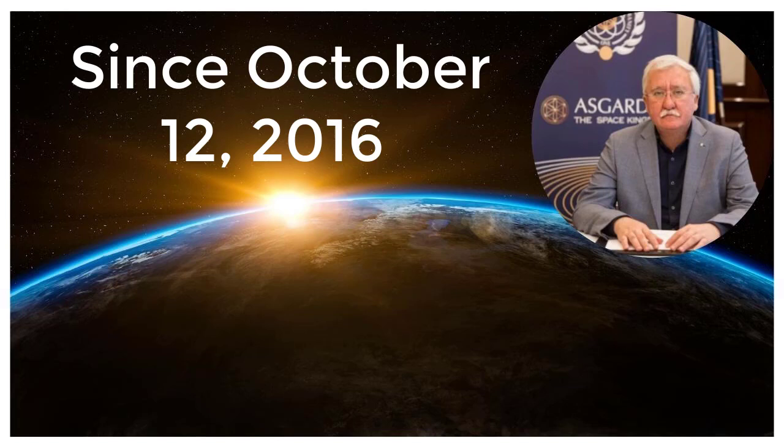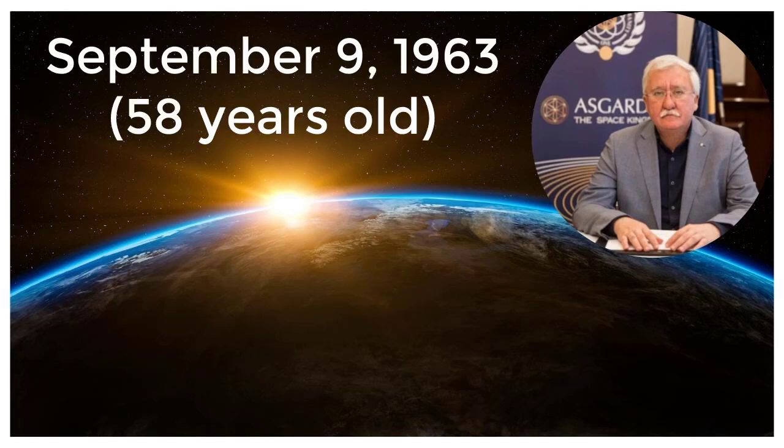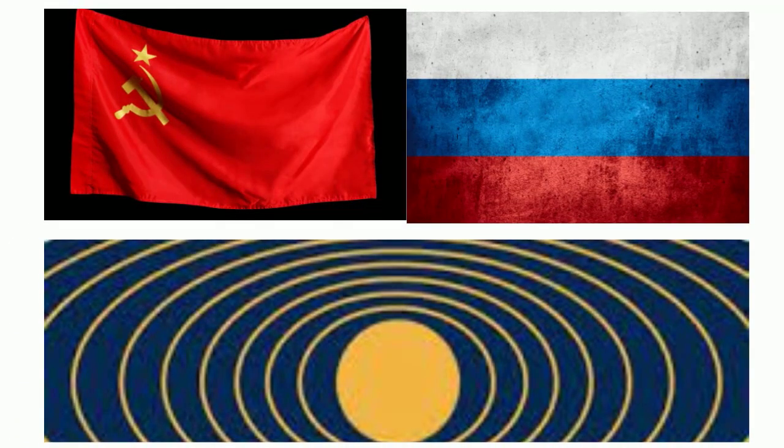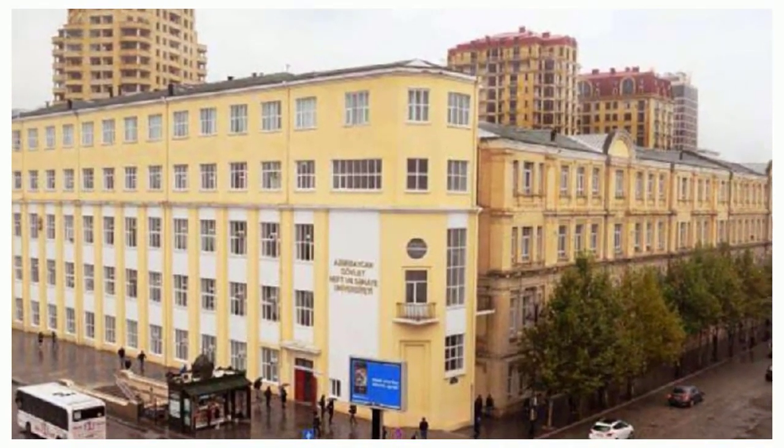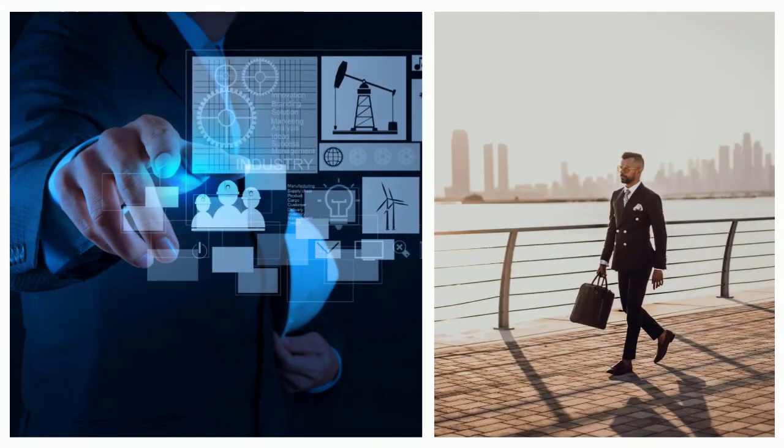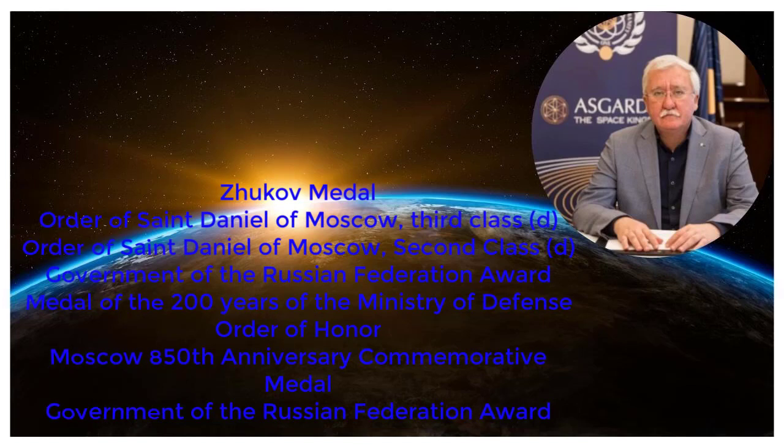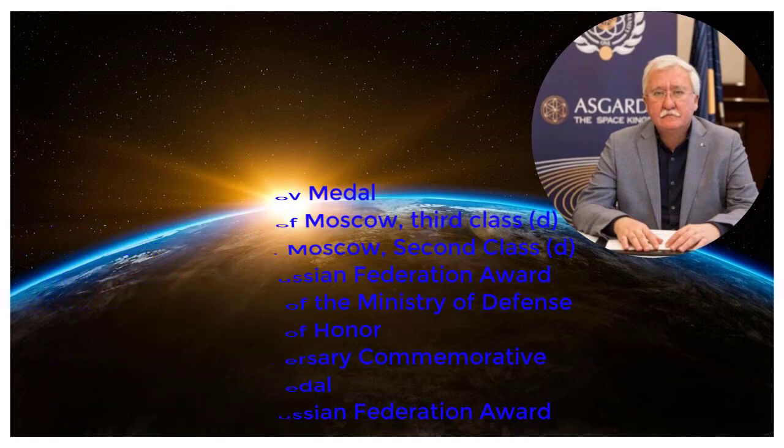Flag official Asgardia. Head of state: Asgardia since October 12, 2016. Biography: birth September 9, 1963, 58 years old, Baku. Name in the native language: Igor Ashurbeyli. Nationalities: Asgardia, Soviet, Russian. Training: Azerbaijan State University of Petroleum and Industry. Activities: Founder October 12, 2016, Engineer, Businessman. Ashurbeyli Awards Detailed List: Zhukov Medal, Order of St. Daniel of Moscow Third Class, Order of St. Daniel of Moscow Second Class, Government of the Russian Federation Award, Medal of the 200 Years of the Ministry of Defense, Order of Honor, Moscow 850th Anniversary Commemorative Medal, Government of the Russian Federation Award.